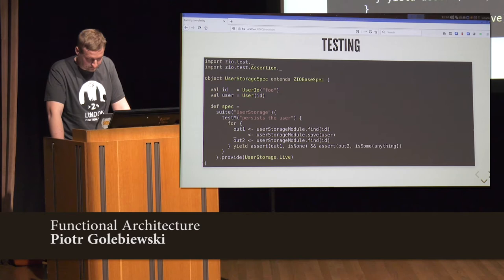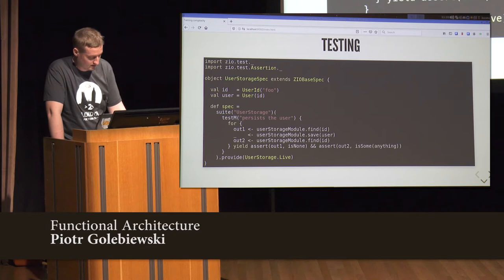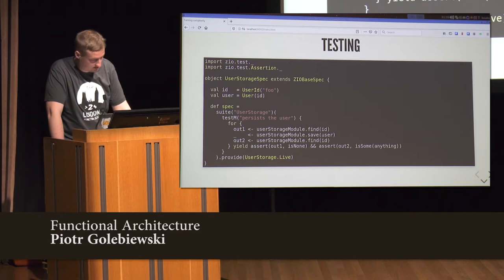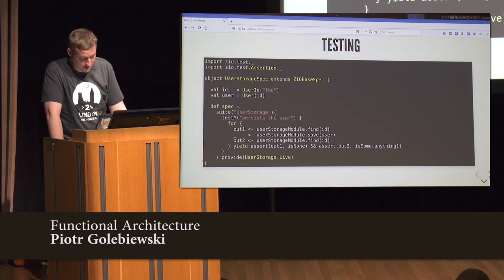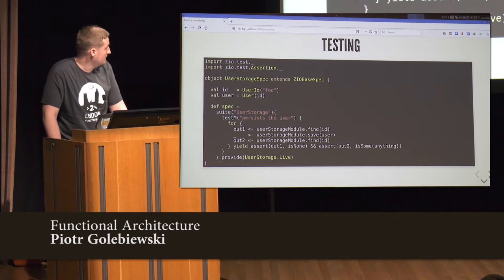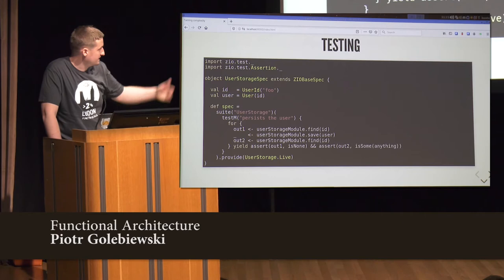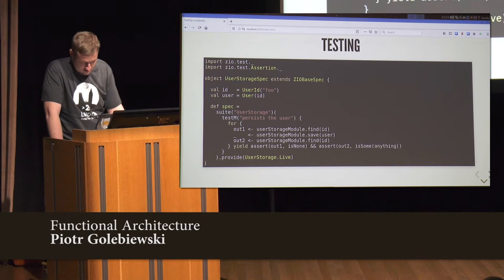Now let's get to the testing part. This is how a ZIO test looks. I won't be covering ZIO Test itself in detail — Adam did a great job yesterday — so I'll just focus on the inside of the test. We can use the capability accessors in the test framework and combine them in a flatMap to create ad hoc scenarios to test. In this example, we're testing a live implementation: we check the user by ID, then save him, then check again. We assert that in the first case the user was not present in the database, and in the second case he was already there.